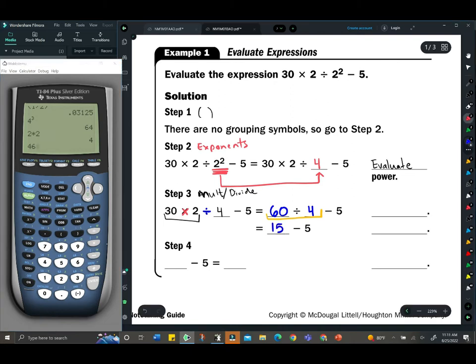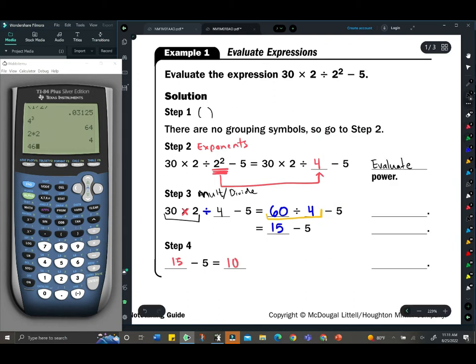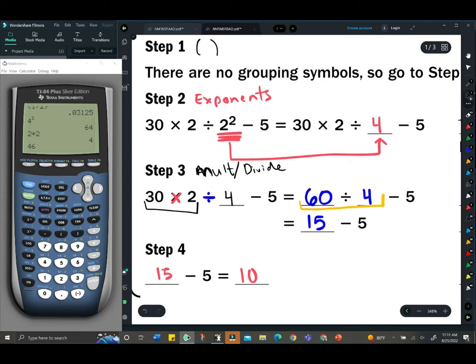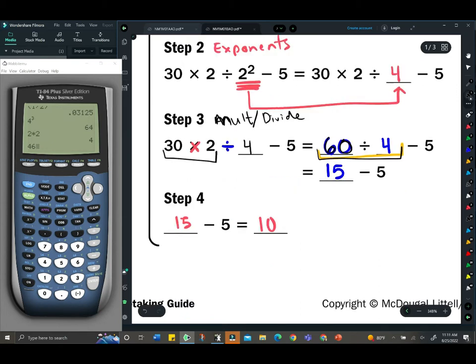Then lastly, 15 minus 5 is going to be 10. We all make mistakes. Always double check that you did the right thing. So 30 times 2, that was our multiplication, that's where I got 60 from, divided by 4 to get 15, minus 5, all that for 10.